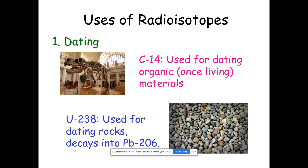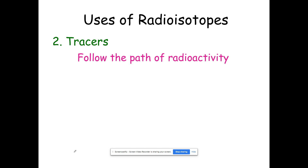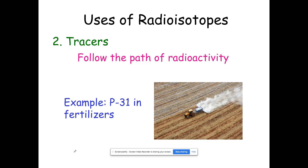So again, if you found something and thought it was a once-living organism, you'd use carbon-14. For rocks, uranium-238. Tracers are things that follow the path of radioactivity. For example, potassium-31 in fertilizers — that image is an aerial view of a tractor spraying a pesticide or fertilizer onto a field. If you find potassium-31 in a water source downriver, you know where it comes from — that potassium-31 would be in the fertilizer, and we can trace where it comes from.